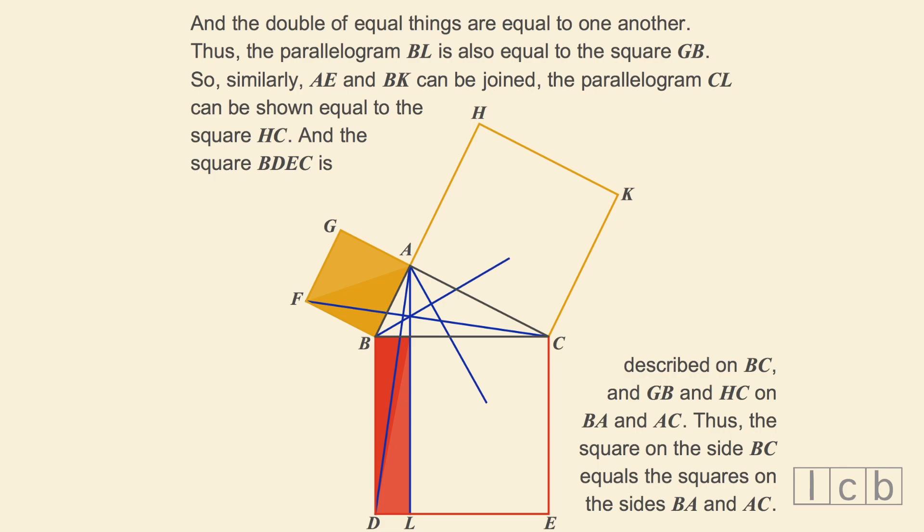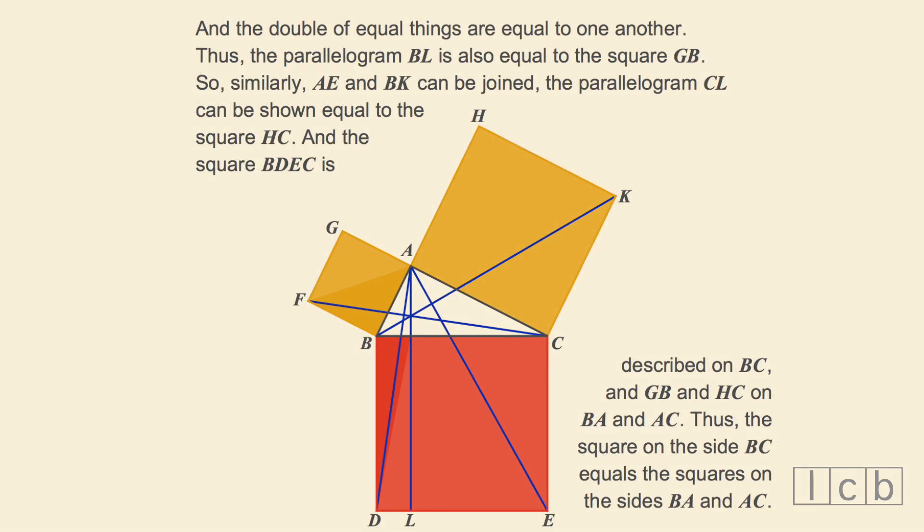So, similarly, AE and BK can be joined. The parallelogram CL can be shown to be equal to the square HC.